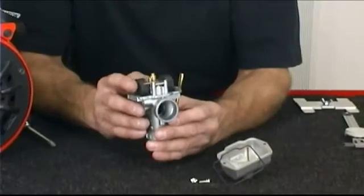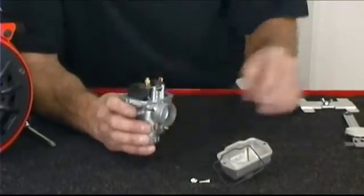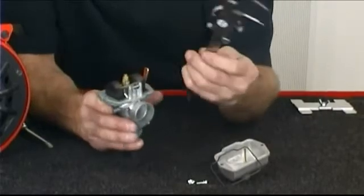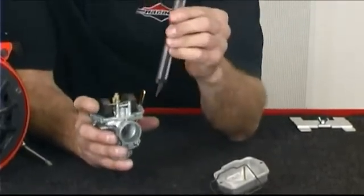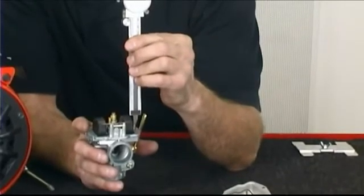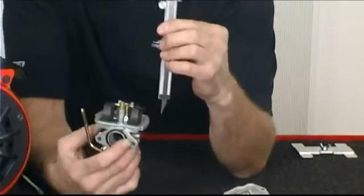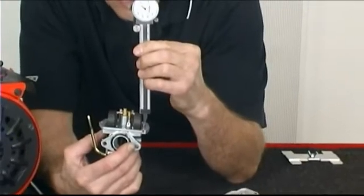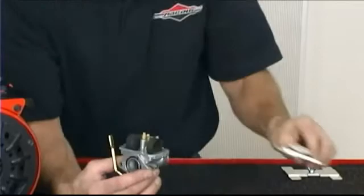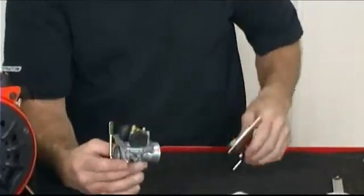There are three basic approaches to setting float height. The first method is using a dial caliper. Setting the caliper to 860 as an initial reference point, place the caliper on the carburetor body gasket surface. Adjust the center tab of the float assembly until the top edge of the float meets 860 on the caliper. We recommend checking both floats as a twisted or bent float will affect your carburetor's performance.